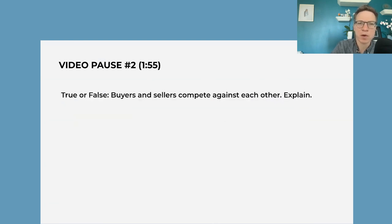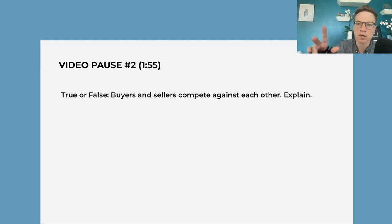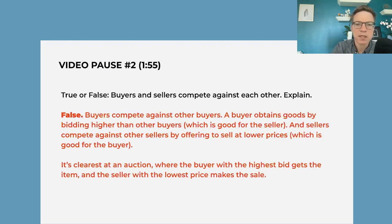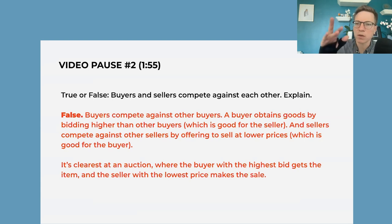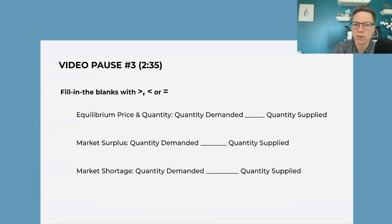Another idea in the video that is important for students to think about is how prices are determined — because buyers compete against each other and sellers compete against each other; they don't compete against one another. Ultimately, buyers are competing against buyers and sellers are competing against sellers. This is clearest at an auction, where the buyers are competing — you can also think about a house where the highest bidder gets the house.